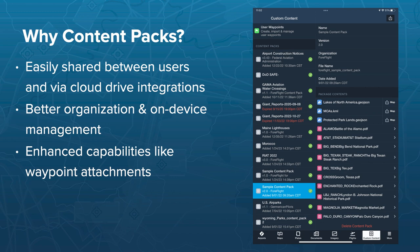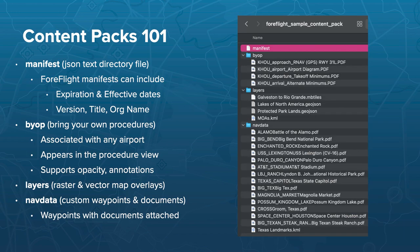Once you've aggregated your different types of custom content, you can bundle them together into a content pack. Benefits include easy sharing between users through cloud drive integration, easier organization on your device, and enhanced capabilities like waypoint attachments. A content pack is a zip file that ForeFlight is set up to unpack and organize within the application, making all assets show up in the relevant places. All components are optional — you can pick what fits your needs.